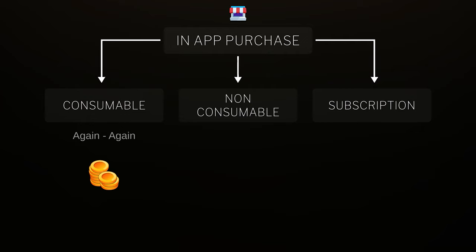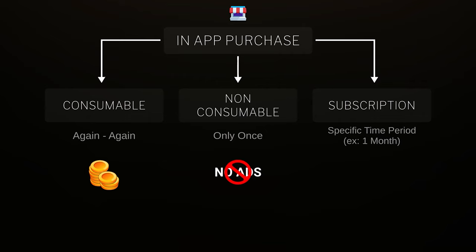Non-consumable items are the opposite of consumable. These items cannot be purchased again and again — for example, a no-ads option in which the player pays a specific amount of money to remove ads from the game forever. Subscription items can be purchased but only for a specific period of time, and when the subscription period is over, the player has to repurchase it to regain access. An example would be a VIP member, royal pass, or elite pass.